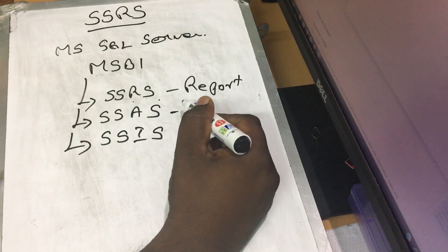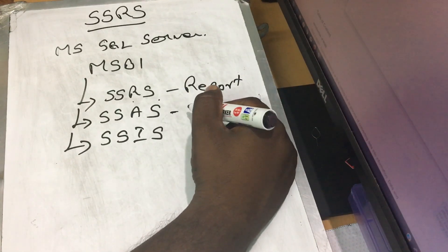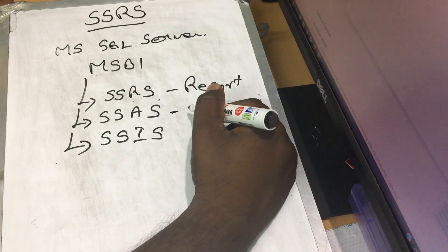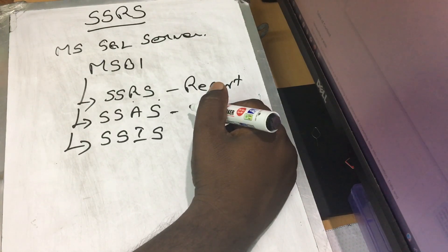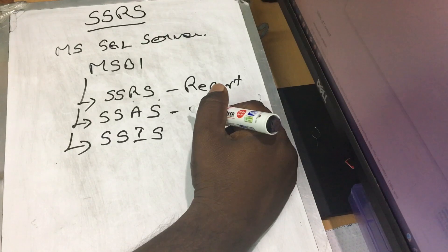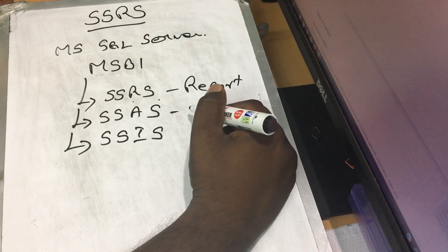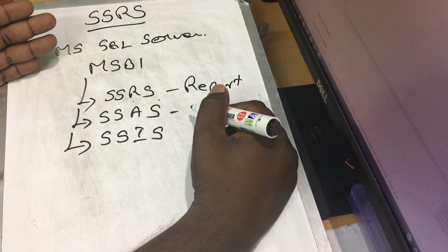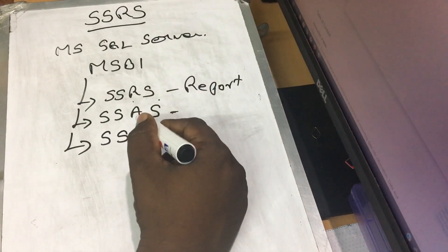With the analytical service — SSAS — we have data, we can analyze it and report it. So we can easily process it. When you analyze it and create a temporary dataset, we use it to report it. We can use SSAS, the analytical service.